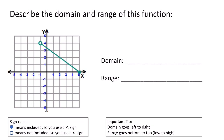Let's try describing the domain and range of this function. I'll use the box method, starting with the domain going left to right. The leftmost point is at negative 1, and the rightmost is at 5. At negative 1, I have an open circle, and at 5, I have a filled-in circle. So my domain goes from negative 1 with less than — because it's not included — then x, and then less than or equal to 5 because 5 is included. When describing domain left to right, you always use less than signs, and just decide whether it's included or not.